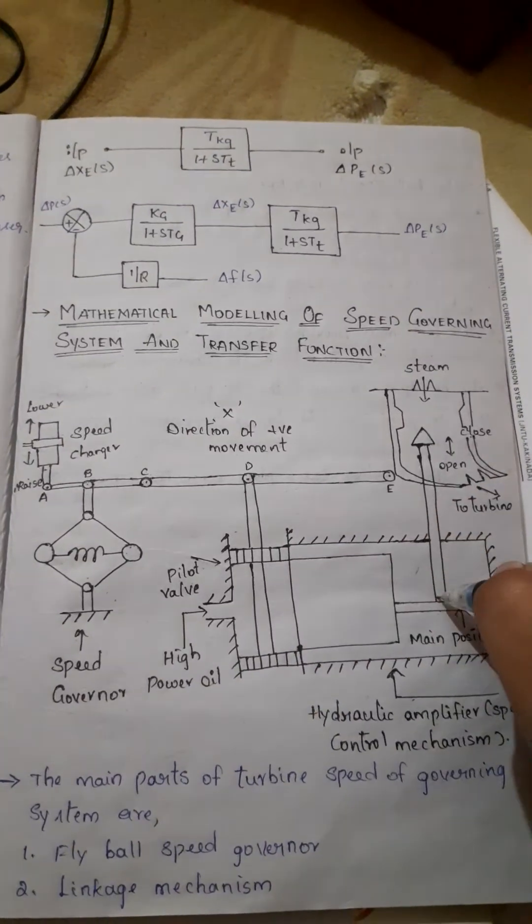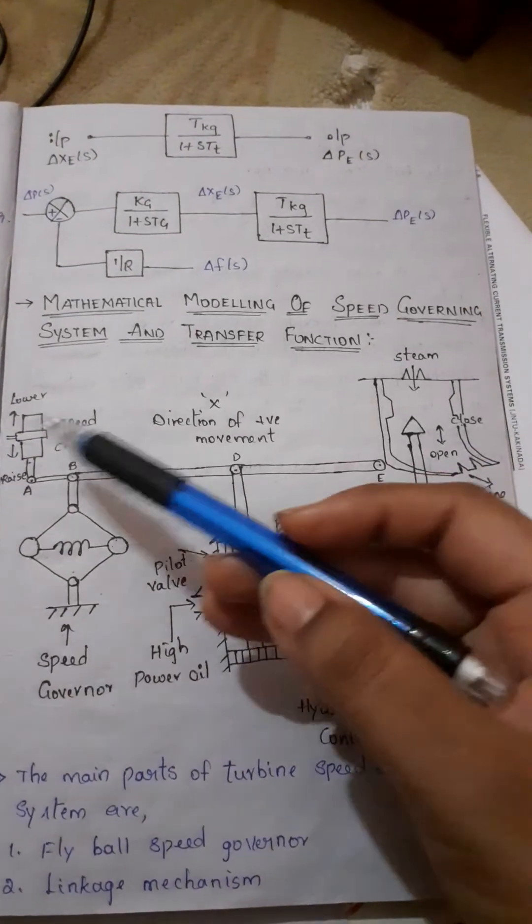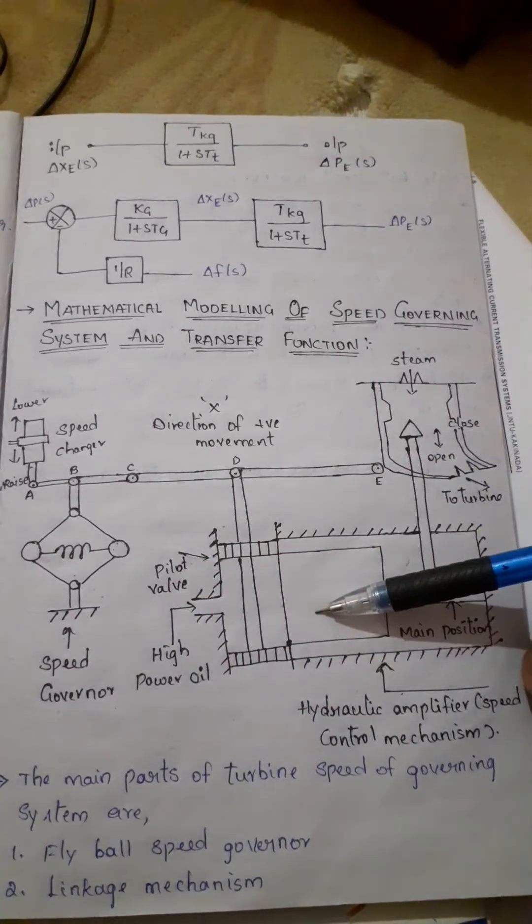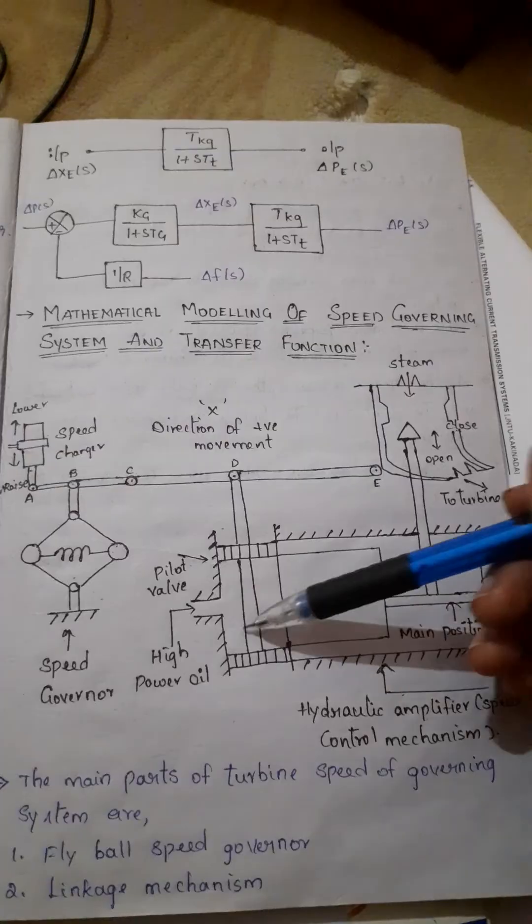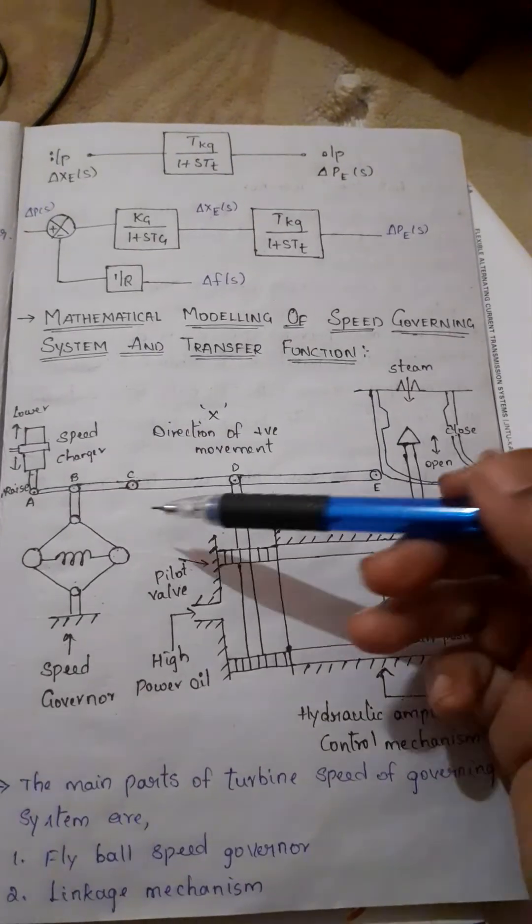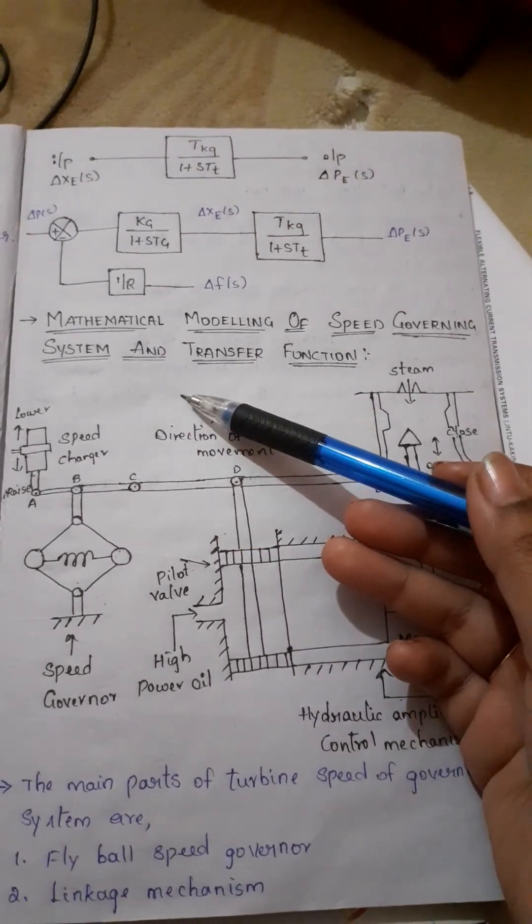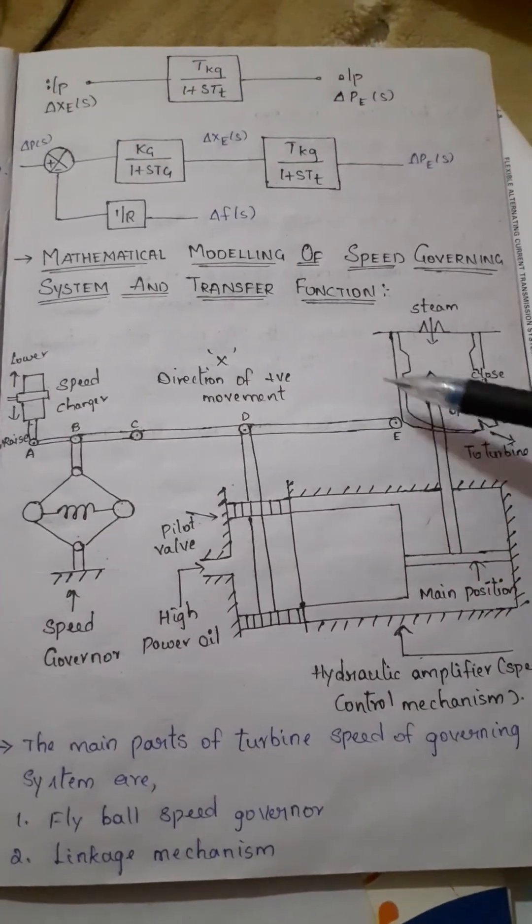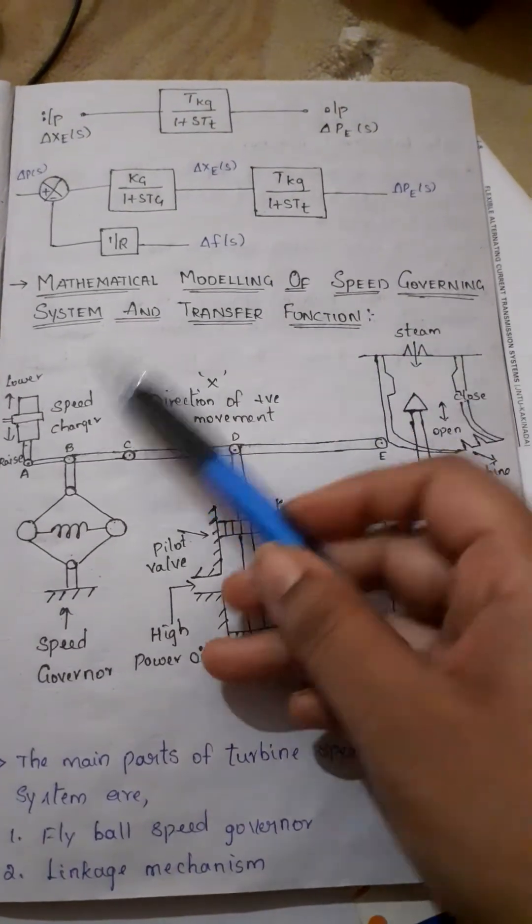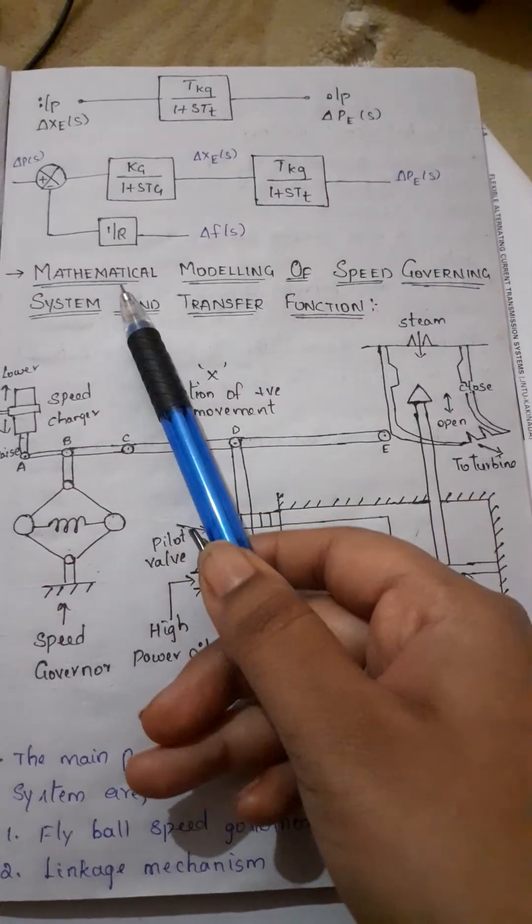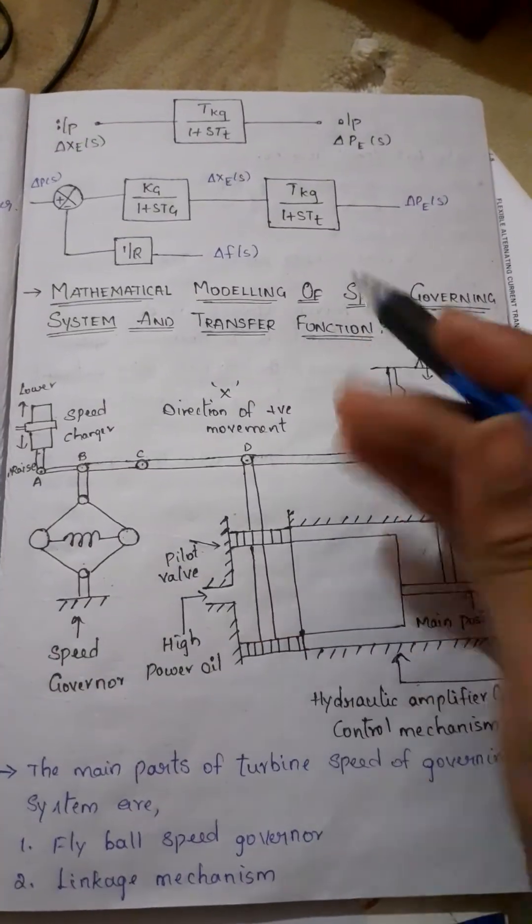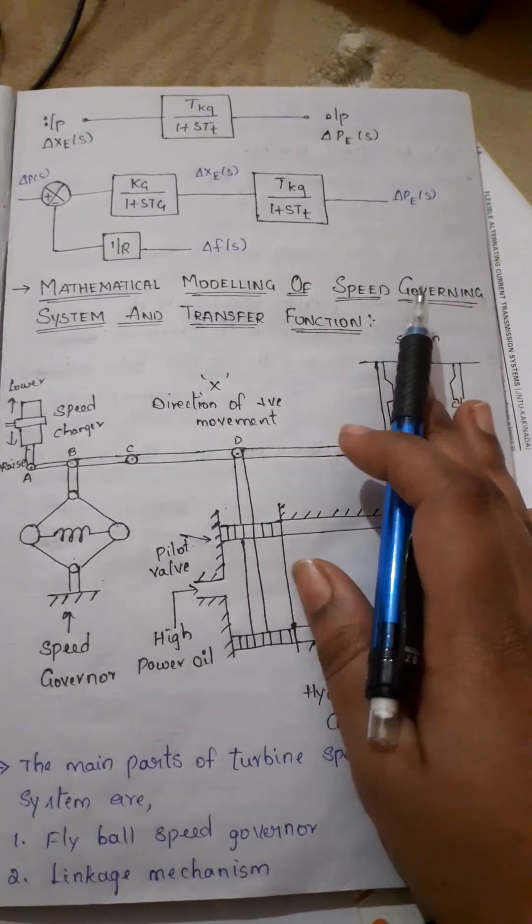If it is upward movement, the reverse happens with the speed changer. Downward movement opens the upper pilot valve to admit steam. In upward movement, the lower pilot valve will open. This is the working of the speed governing system. This diagram along with the explanation of the four parts is enough.